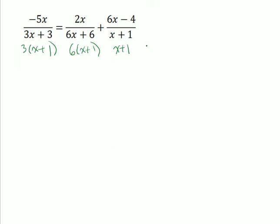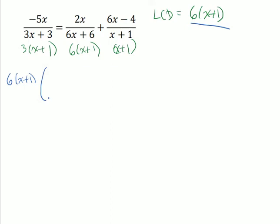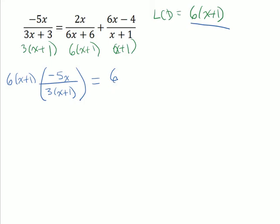When we find our least common denominator, we look at all the different factors we have. x plus 1 shows up multiple times, and then we have 3 and 6 as factors. Since 3 can be multiplied to give us 6, our least common denominator is going to be 6 times x plus 1. So we're going to multiply both sides of the equation by 6 times x plus 1, rewriting each denominator in factored form because it makes it easier to see how things cancel out.